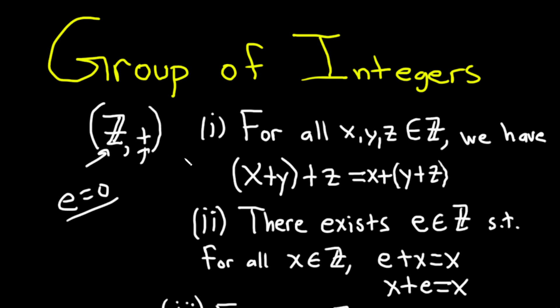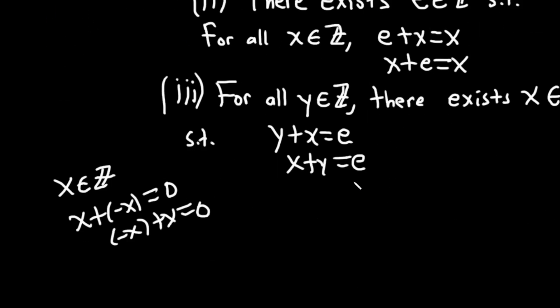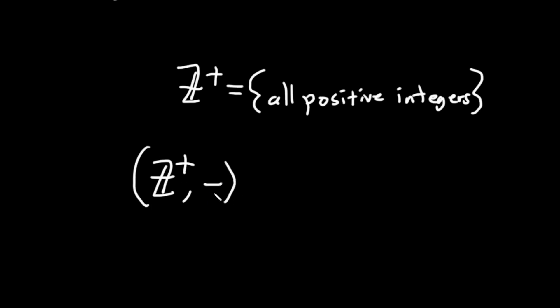For example, if we look at, let's just make something up, it's not going to be a group. If you take the set of positive integers, okay, so this is the set of all positive integers. And you say, hey, what about a set of positive integers under the operation of subtraction? Is that going to be a group?